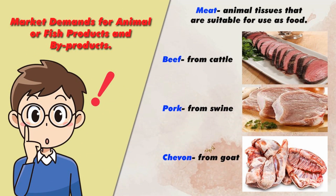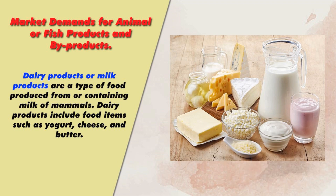Animal and fish products and byproducts include: Meat — animal tissues that are suitable for use as food, such as beef from cattle, pork from swine, and chevon from goat. Dairy products are a type of food produced from or containing the milk of mammals, including food items such as yogurt, cheese, and butter.